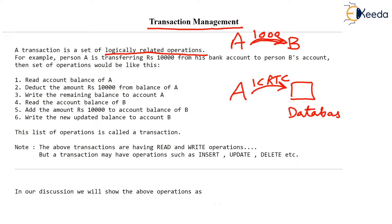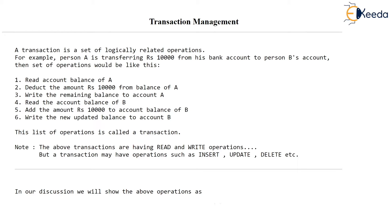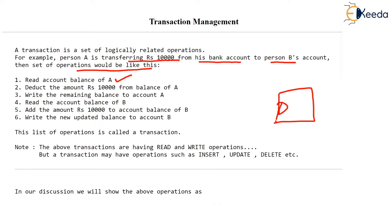A single transaction can have multiple operations. As an example, imagine person A is transferring 10,000 rupees from his bank account to person B's account. The set of operations would be like this: first, the DBMS will read the account balance of A. Let's say the account balance of A is 10,000 rupees, so that value has to be first read from the DBMS store. Then we deduct the balance by 10,000 — let's say the initial balance of A is 20,000.